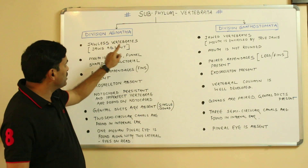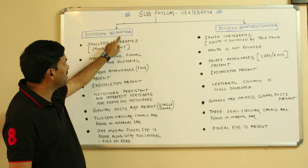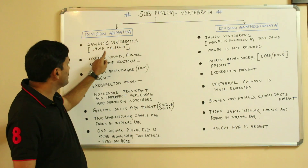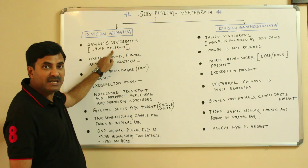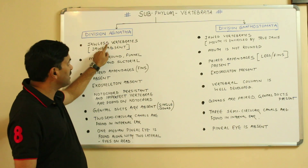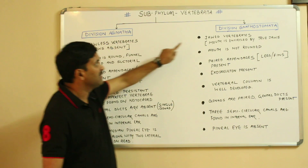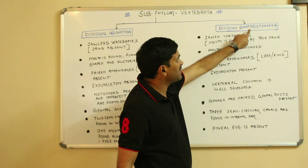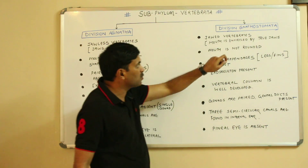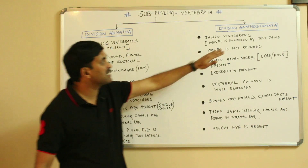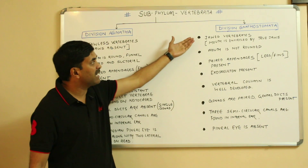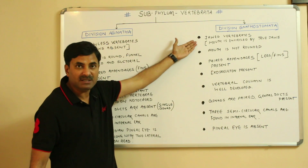The very first point is that Agnatha means what? 'A' means absent, 'gnatha' means jaws — meaning jaws are absent. We can say that the members of division Agnatha are jawless vertebrates. While in division Gnathostomata, 'gnatho' means jaws and 'stomata' means mouth, meaning the mouth is encircled by true jaws. Hence they are jawed vertebrates.